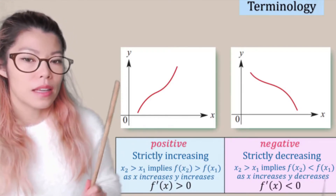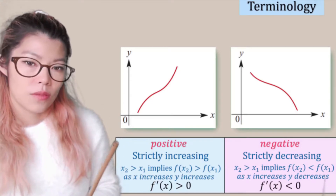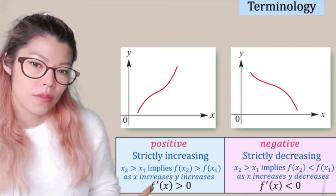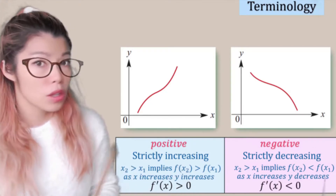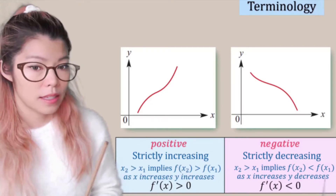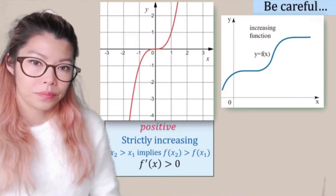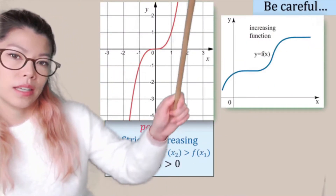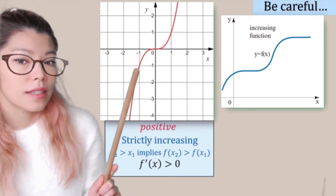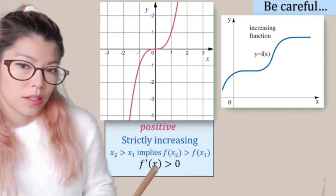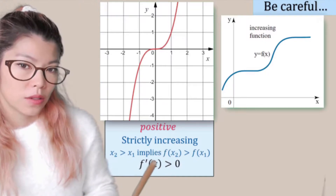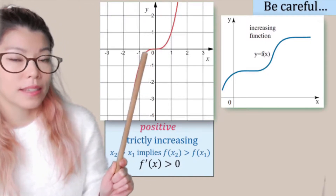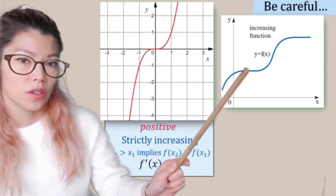Now, if something is strictly increasing, then we can also see that for most of the graph the derivative is greater than zero, but it's not always the case. Here we have two graphs. This one is actually described as strictly increasing, even though the gradient is zero at one point. See how the gradient is always greater than zero, but when you're strictly increasing, you can have points that are equal to zero, just not intervals.